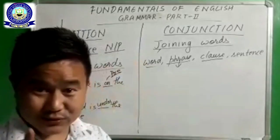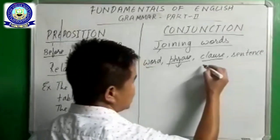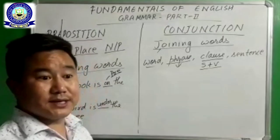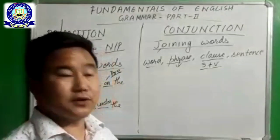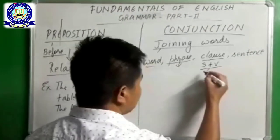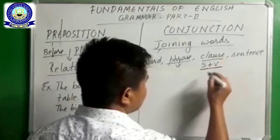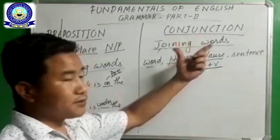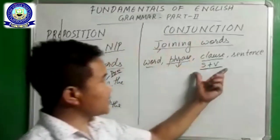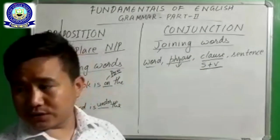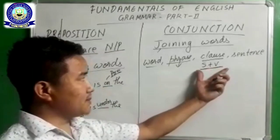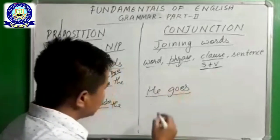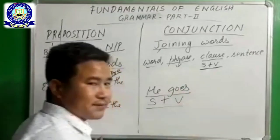What do we mean by clause? Clause is a combination of subject and verb — subject plus verb. In later videos we will be discussing about the different kinds of clauses. We have independent clause, subordinate clause, ordinary clause. But just remember: clause is the combination of subject plus verb. For example, 'he goes' — subject, verb — this can be an example of clause.